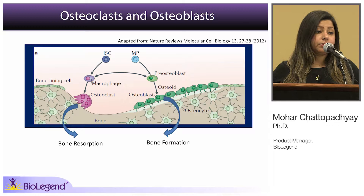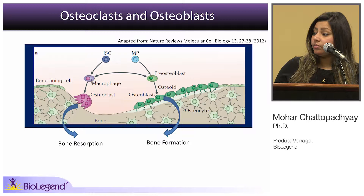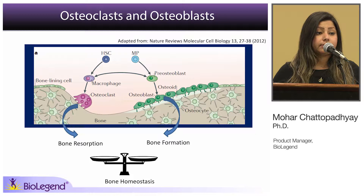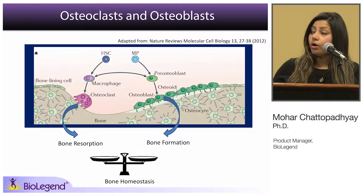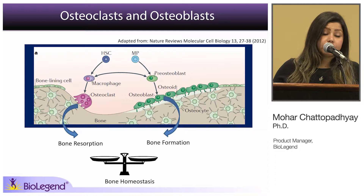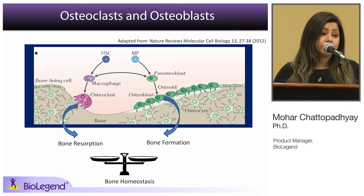The balance between bone resorption and bone formation is very tightly regulated. Any tipping of the balance on either end would lead to bone dysregulation and diseases like bone cancer. Osteoclast cells are derived from hematopoietic stem cells, which differentiate into macrophages, which further differentiate into osteoclasts. Osteoblast cells, on the other hand, come from mesenchymal progenitor cells, which differentiate into pre-osteoblasts and then further into osteoblasts.